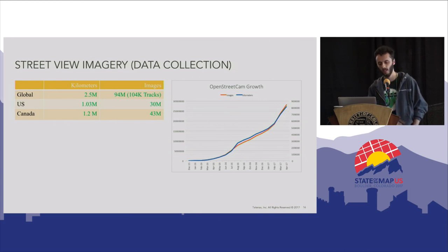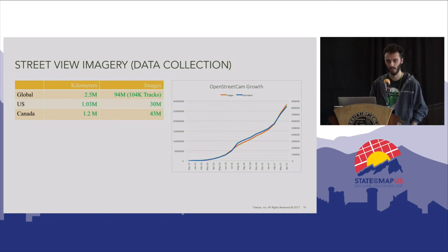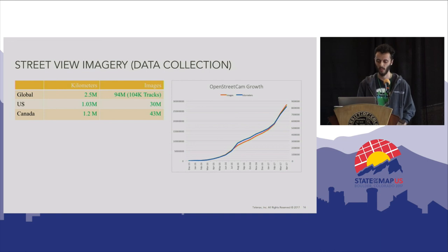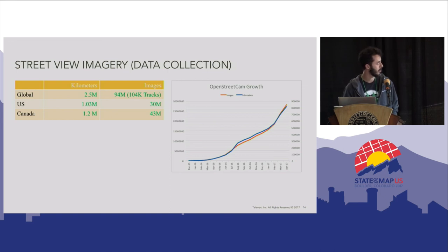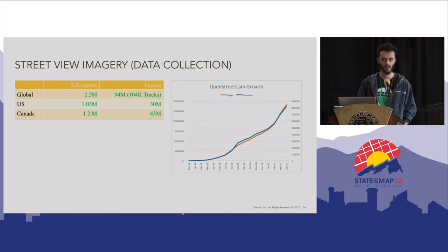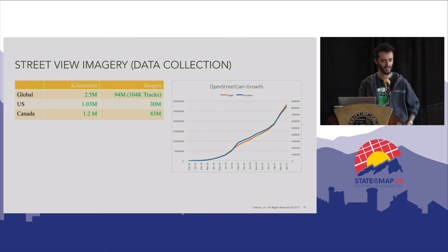Regarding street-level imagery, in Canada we've collected around 1.2 million kilometers of road, which translates into roughly 43 million images. Globally, we have 2.5 million kilometers surveyed, meaning around 94 million images collected. It's pretty amazing that we're almost at 100 million images since we launched OpenStreetCam at State of the Map last year — formerly known as OpenStreetView, but we're keeping it as OpenStreetCam. Please give a big round of applause for all of you who contributed to this — thank you.